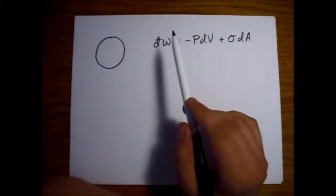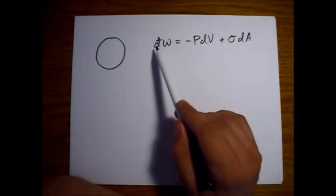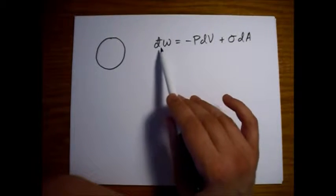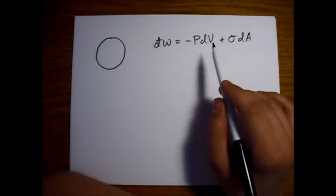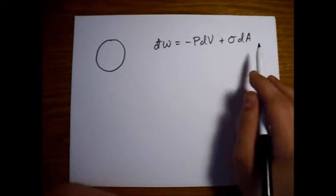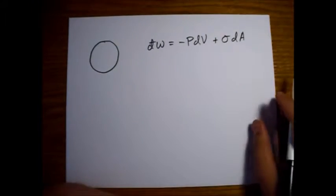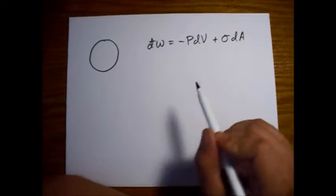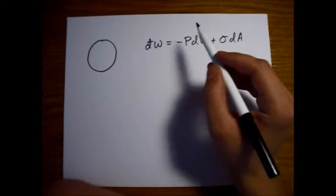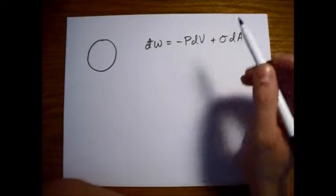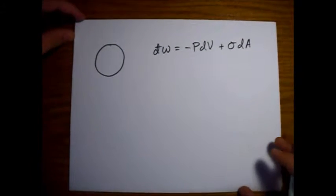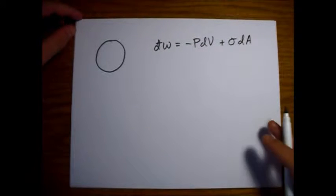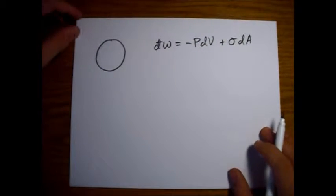So to start off with, doing a little infinitesimal bit of work on the system, this is what we have in the case of a drop of water. So this PdV, as you probably recognize, the minus sign is here because, due to the way pressure is defined, which is opposite to all of these other types of forces.